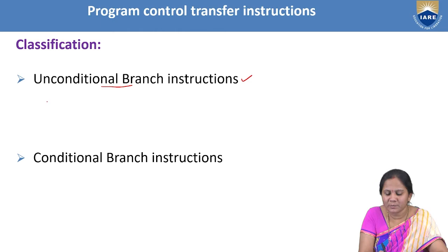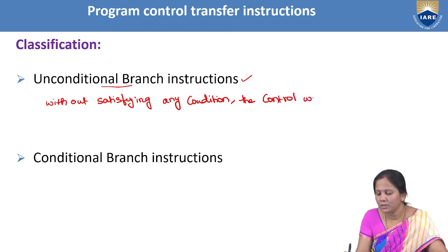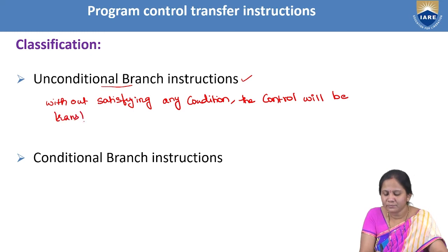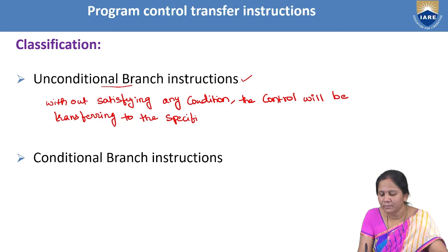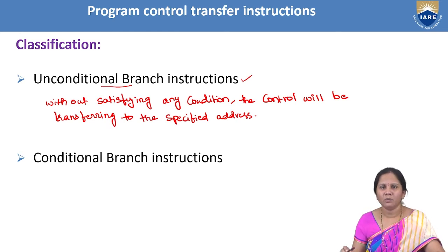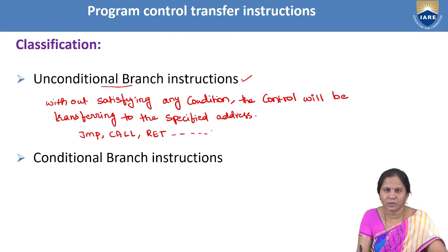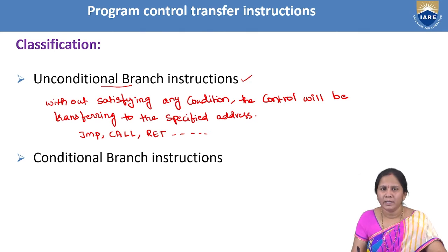Unconditional Branch Instructions means without satisfying any condition, the control will be transferring to the specified address. No need to satisfy any condition. When these instructions are executed, the control will be transferring to the predefined address. For example, instructions like JUMP, CALL, and RET — if such type of instructions are executed, the control will be transferring to the predefined address without satisfying any condition. These are some of the examples that come under Unconditional Branch Instructions.